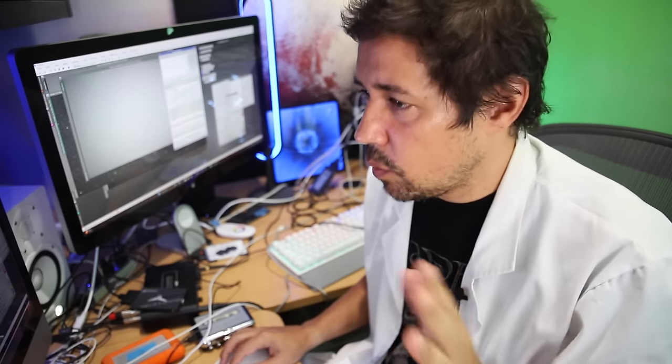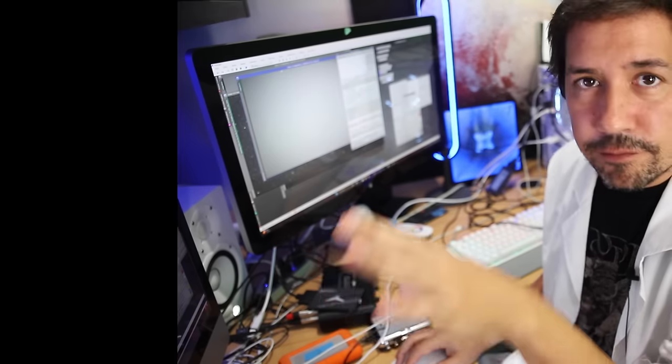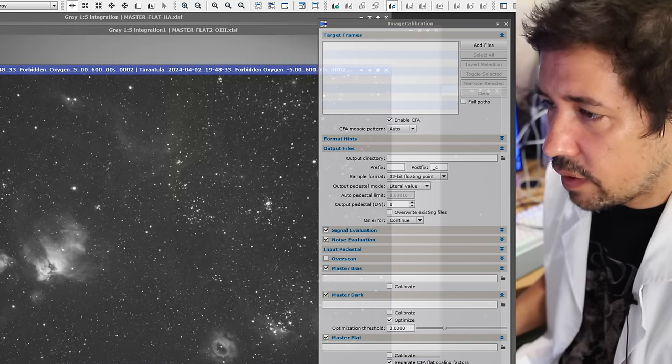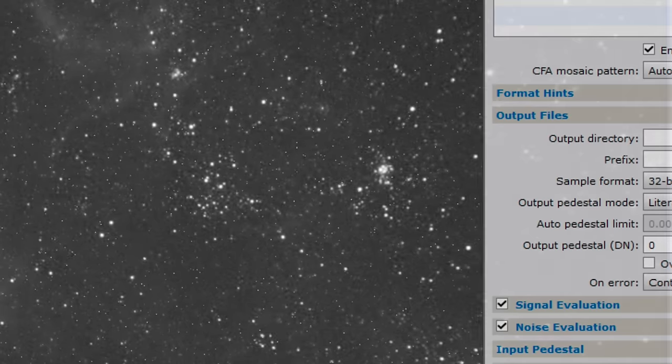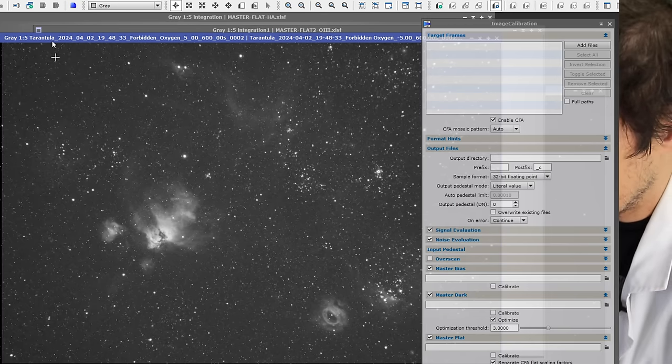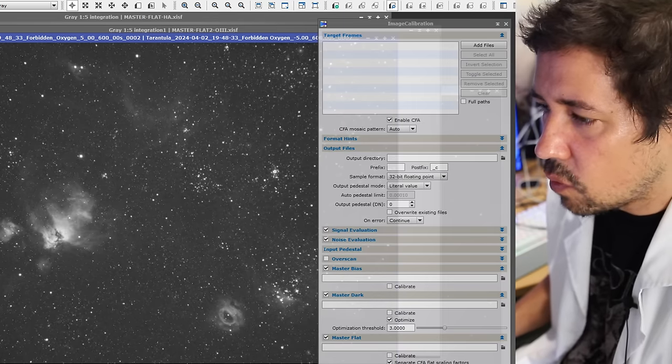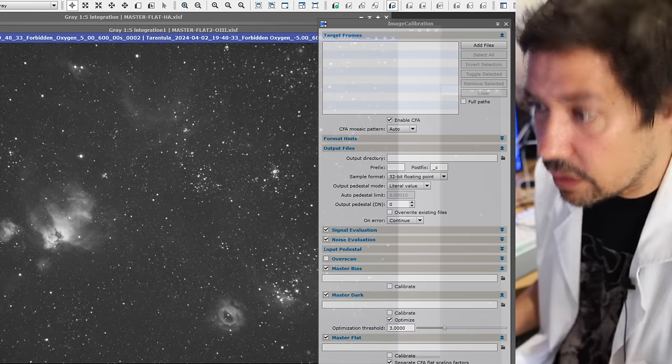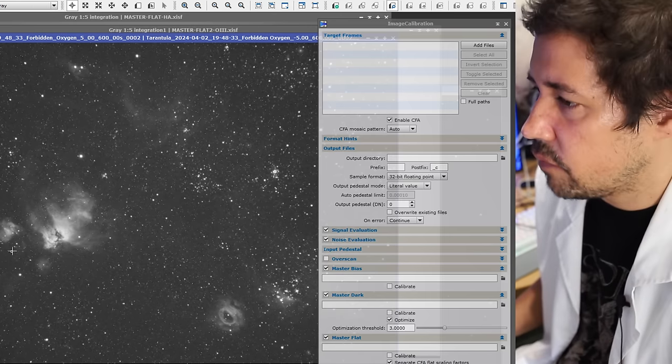Okay, I'm in PixInsight. What we want to do is apply this master flat to one of these subs. Here's an oxygen sub. You can see it's super noisy because no darks have been applied yet. And also there's this vignetting on the edge where it gets darker in the corners. It's not very obvious just yet, but once everything's stacked, it gets super obvious.